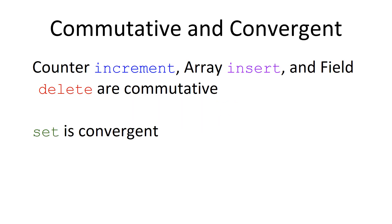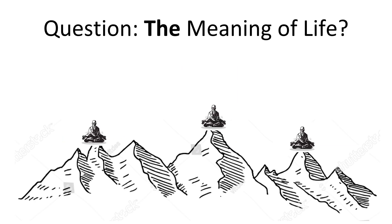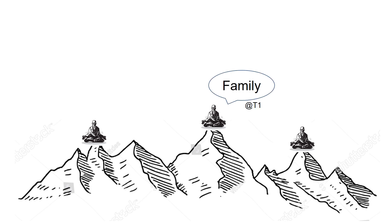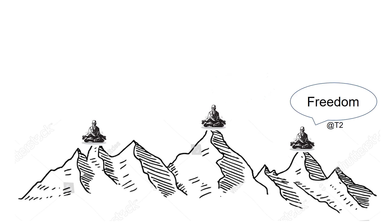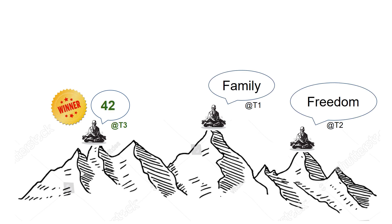We've talked about commutative operations, which cover increment, insert, and delete. Now we're going to talk about set, which is convergent — meaning in a distributed environment, all actors are going to eventually arrive at the same state, but during convergence they may have differing values. We use last writer wins to determine convergence. Using the example of three gurus on mountains: the first says 'family' at time 1, the second says 'freedom' at time 2, and the last says '42' at time 3. Following last writer wins, 42 is the winner.